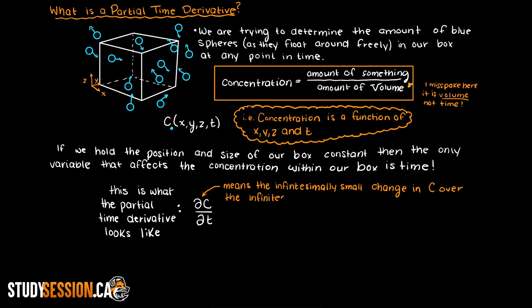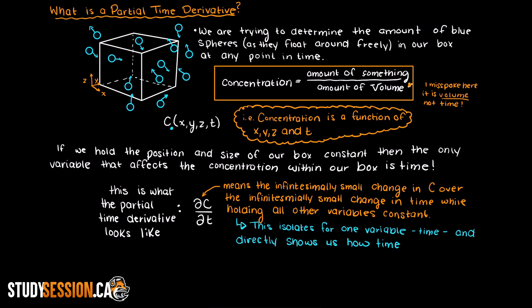So, even though there are multiple variables affecting the concentration here, in our previously mentioned cube, by holding position constant we can isolate for a single variable which is time, hence our partial time derivative.